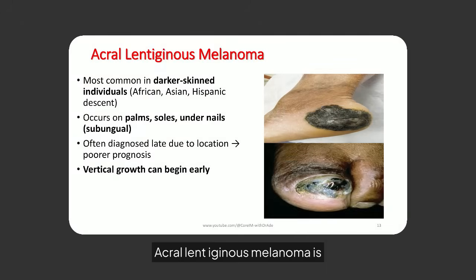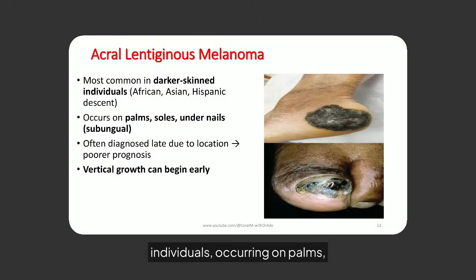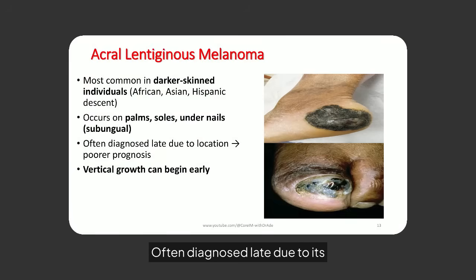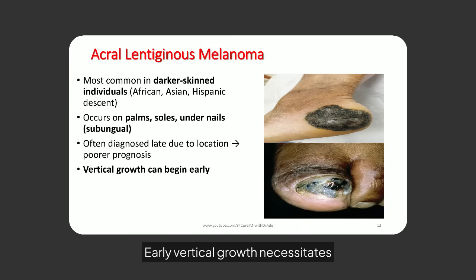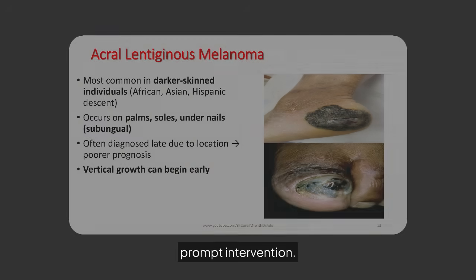Acro-lentiginous melanoma is common in darker-skinned individuals, occurring on palms, soles, and under nails. Often diagnosed late due to its location, it has a poorer prognosis. Early vertical growth necessitates prompt intervention.